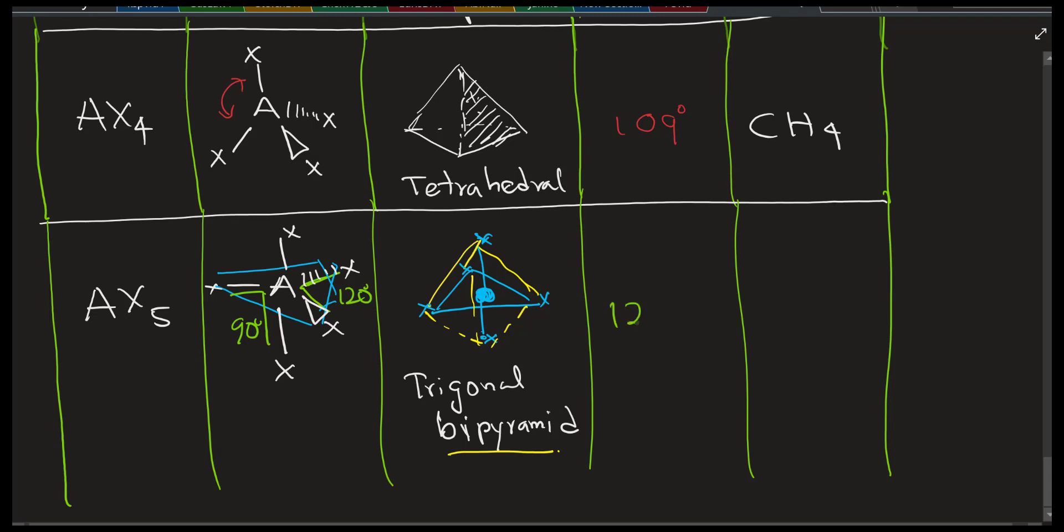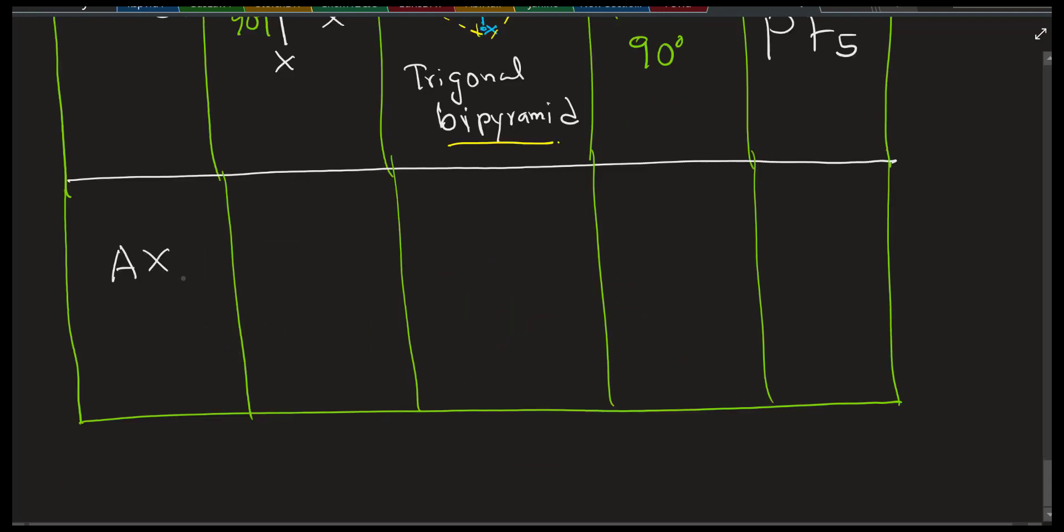Now look at this angle. XAX is 90. Within the triangle is 120. Remember, within the triangle is 120. And the XAX is 90 degrees. So there are many examples for it.